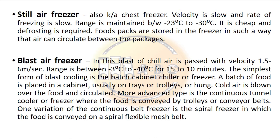The blast air freezer passes a blast of chilled air with a velocity of 1.5 to 6 meters per second. The range is between -3°C to -40°C. The simplest form is the batch cabinet chiller or freezer where a batch of food is placed in a cabinet, usually on trays, trolleys, or hung. A more advanced type is the continuous tunnel cooler or freezer, where food is conveyed by trolleys or conveyor belt. One variation is the spiral freezer, where food is conveyed on a spiral flexible mesh belt.